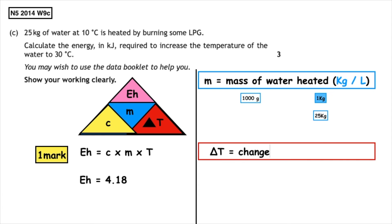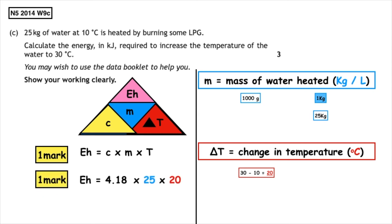We do have a change in temperature, as two temperatures are given in the question: 30 and 10. We take the small number away from the big number, so 30 take away 10 gives us a change in temperature of 20. All of that information substituted in gives us our second mark. When we put it into the calculator, we get the energy released as 2090 kilojoules.